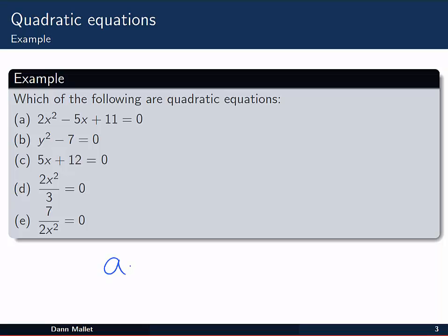Remember that the general form for a quadratic is some number times x squared plus some number, or some other number times x, plus another number c, equal to zero. So we're looking for that sort of relationship here.